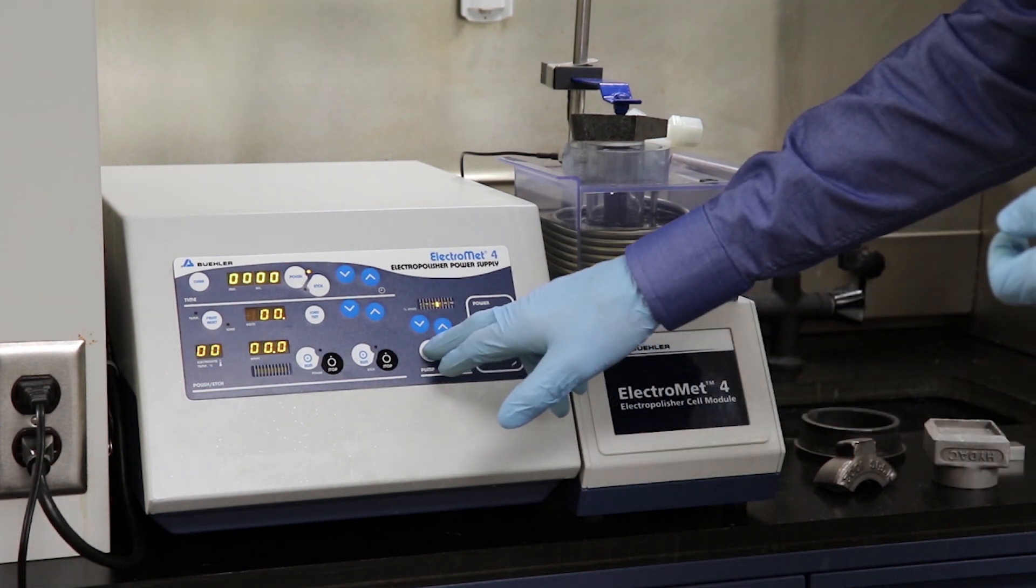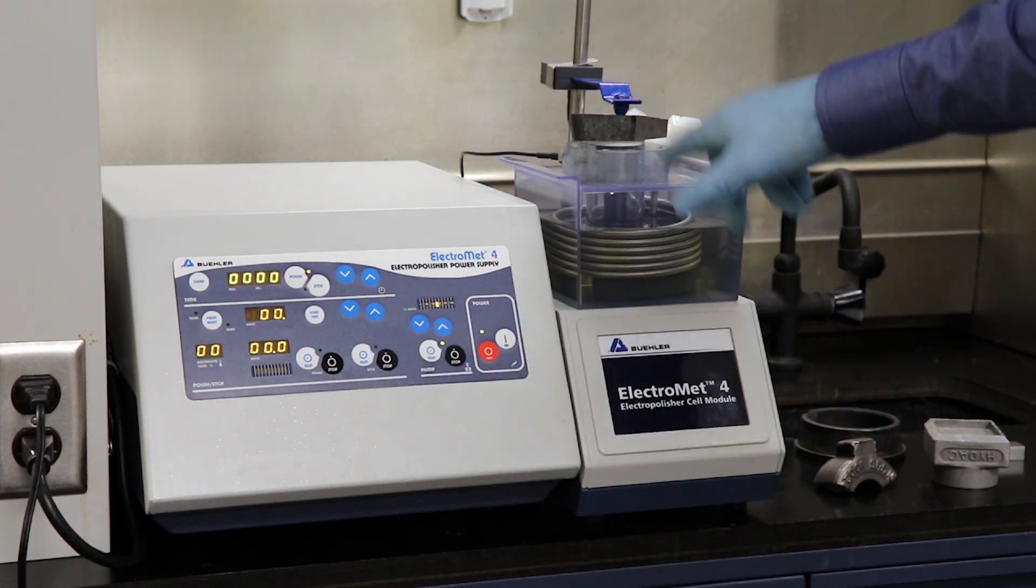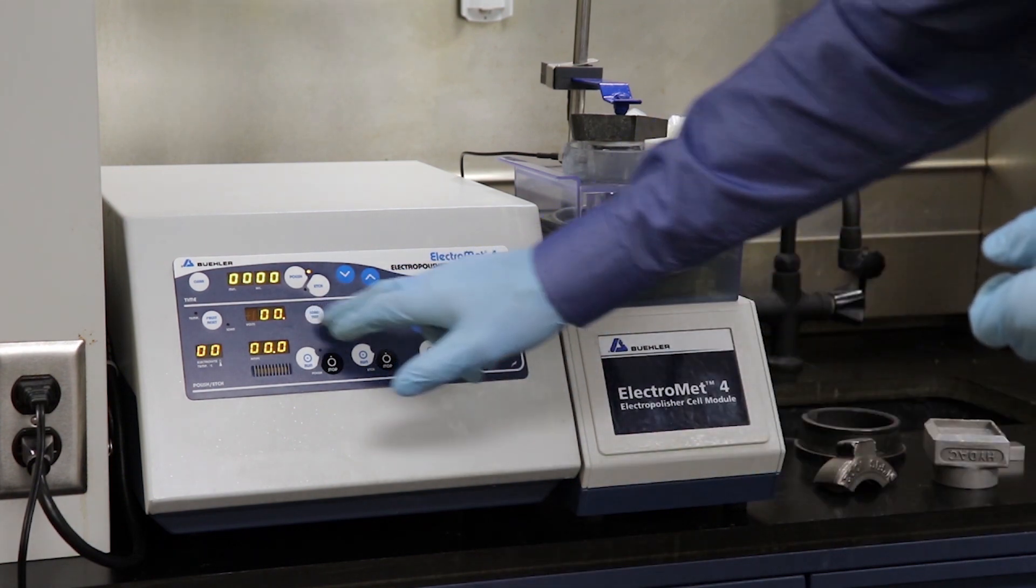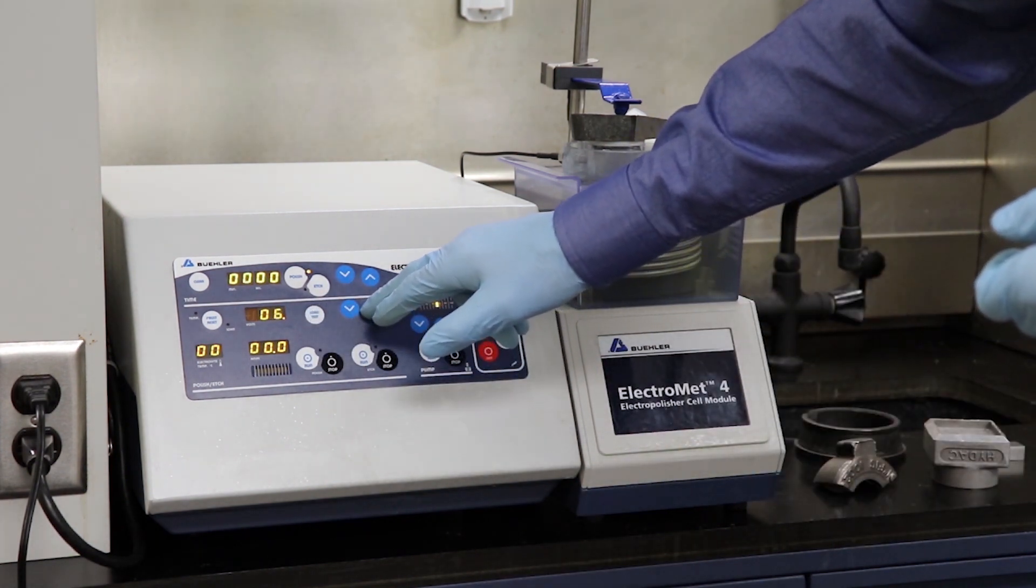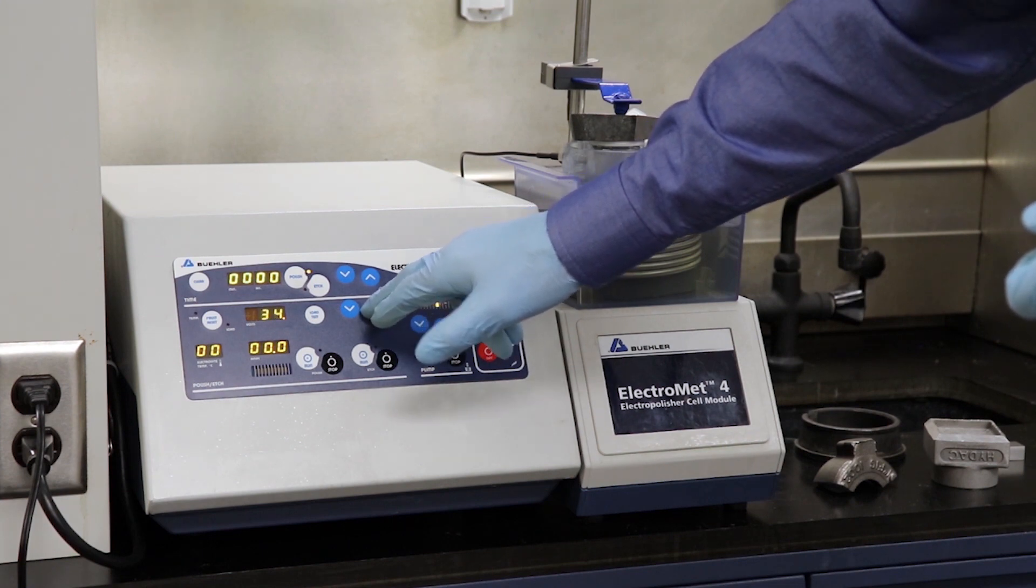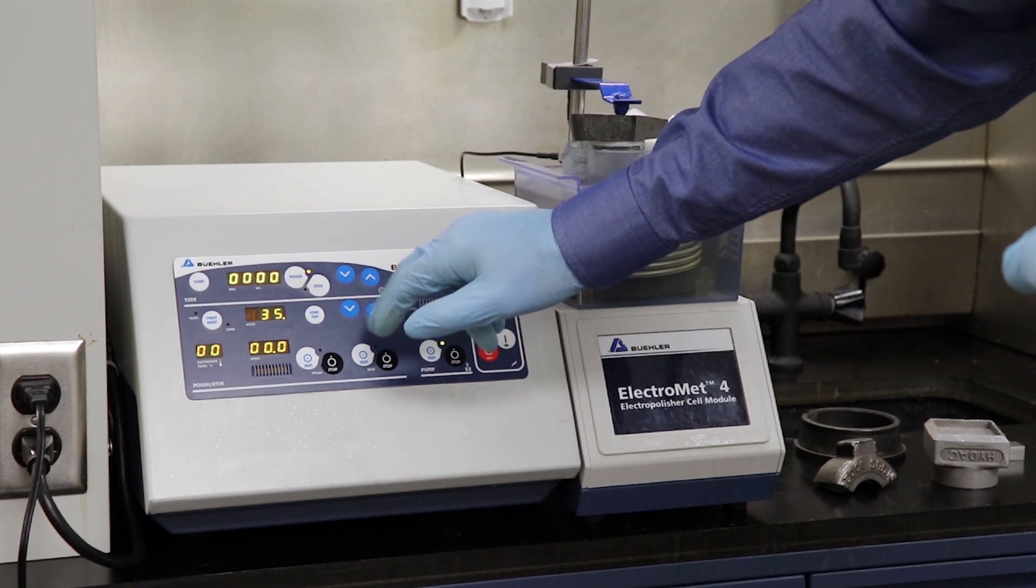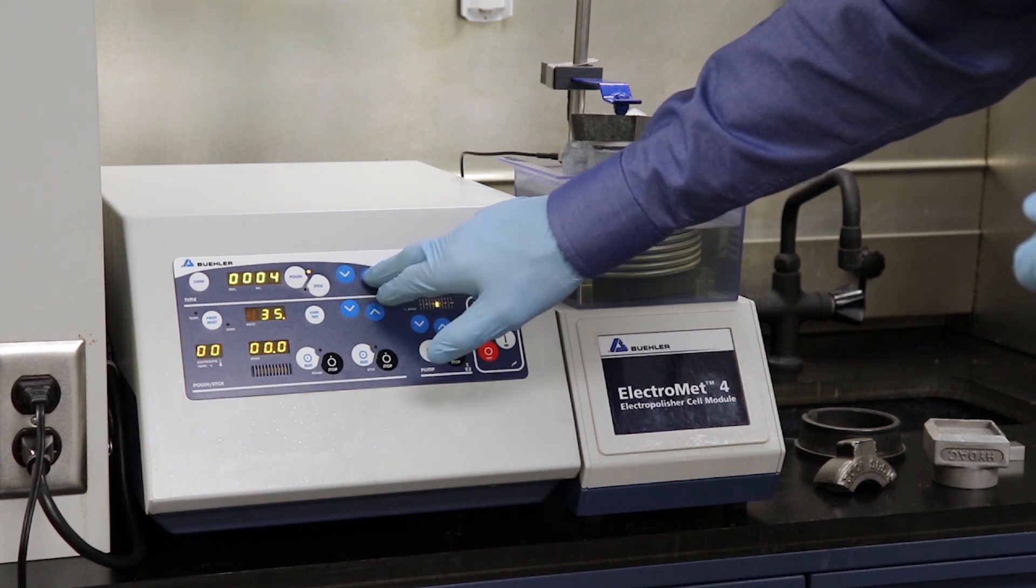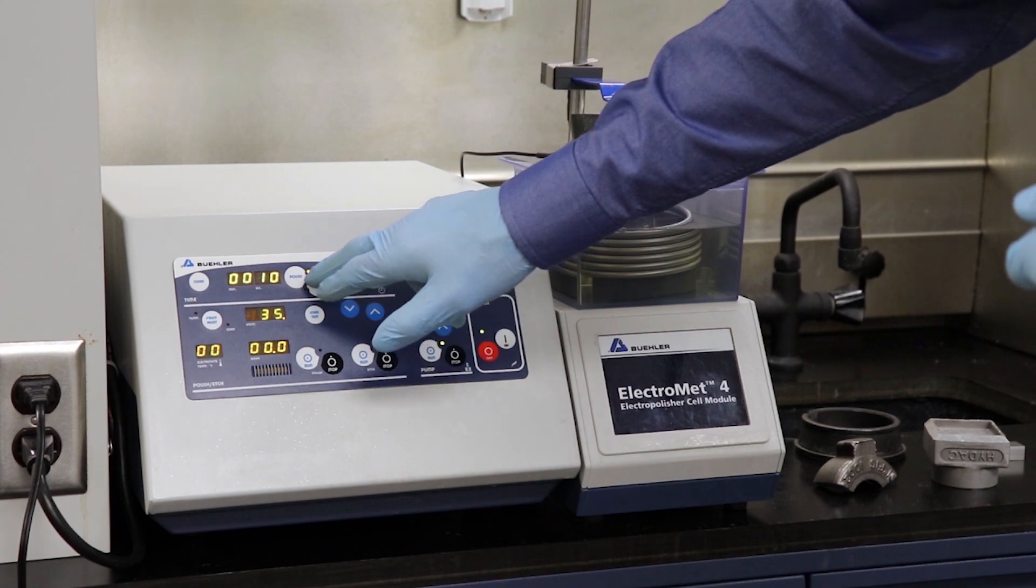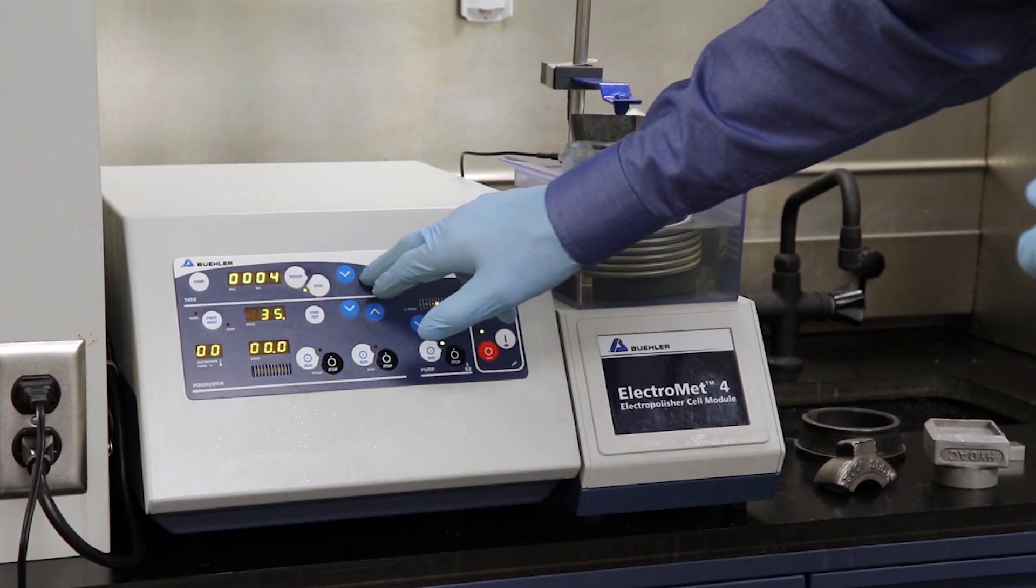I'm going to begin the pump here to create the electrolyte motion and complete my circuit between the electrolyte and the sample material. I'm going to set my voltage. I'm going to polish at 35 volts for about 10 seconds.